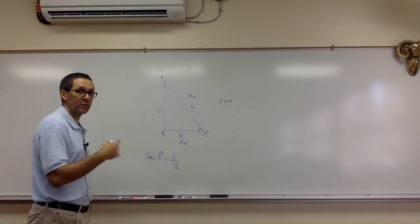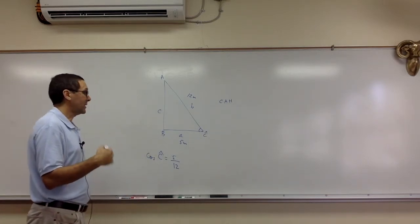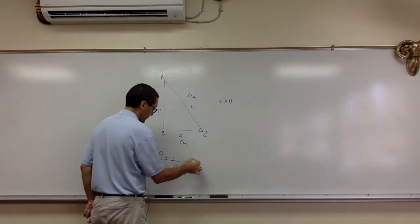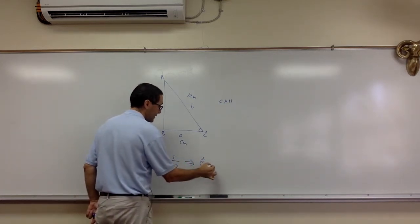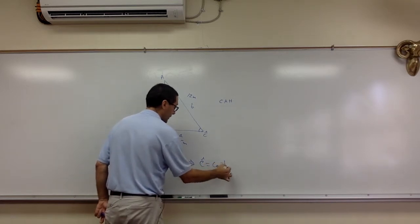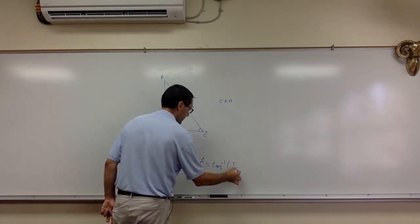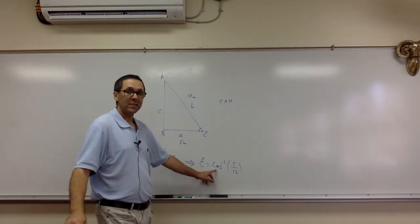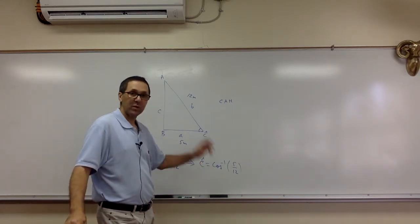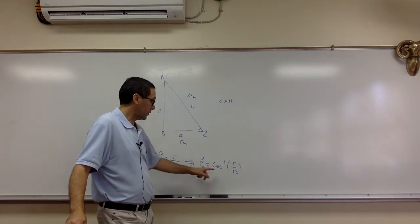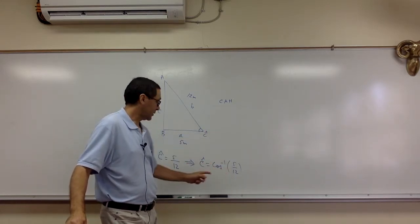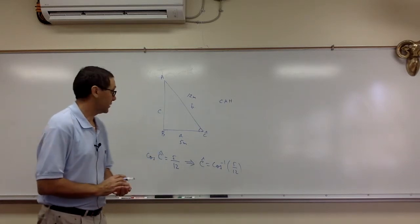Now I'm not interested in the cosine of the angle. I want the actual angle itself. So this is what you do here. Angle C is the inverse cosine of 5 over 12. Now some of you are saying, well, where do I get this inverse cosine? It's in your calculator. Make sure you are in degree mode. You go second cos, and you put in 5 over 12, and it should give you the angle.